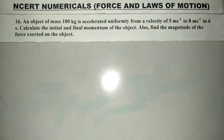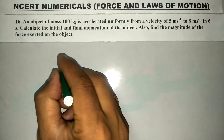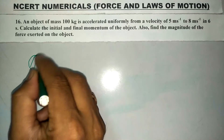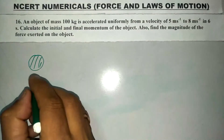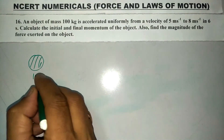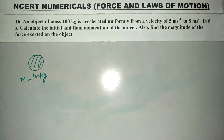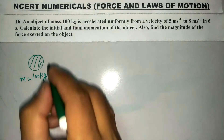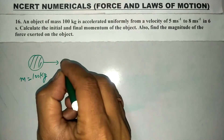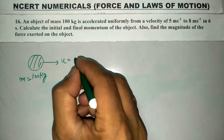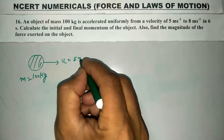So this is the object — let us suppose this is the object. M is equal to 100 kg. The initial velocity is given here.